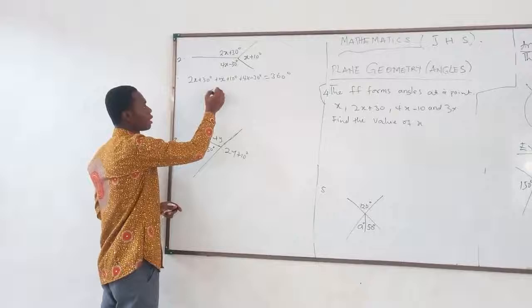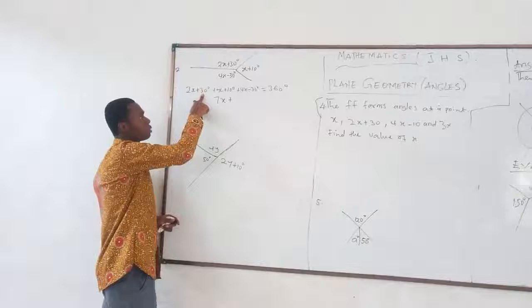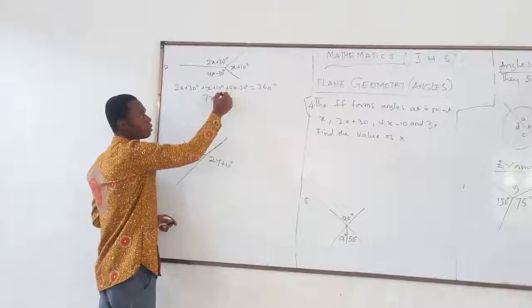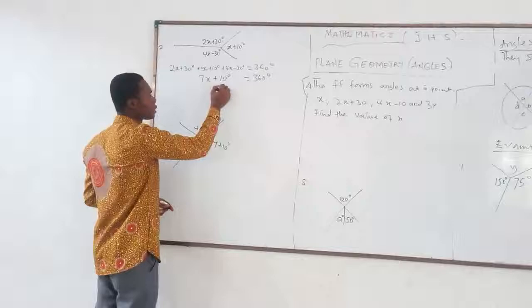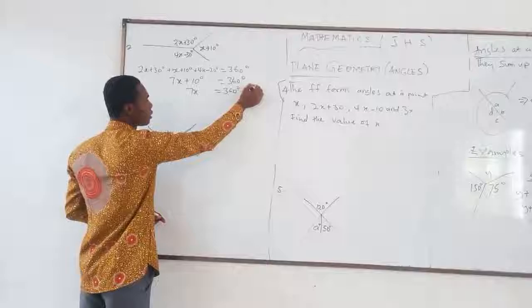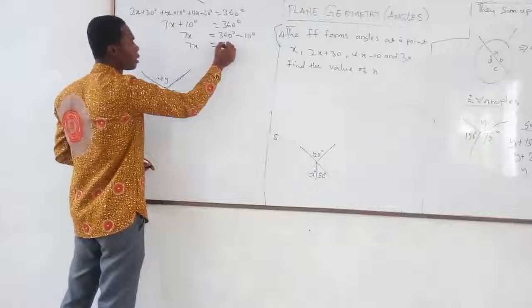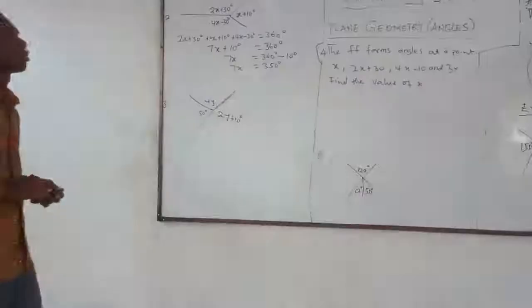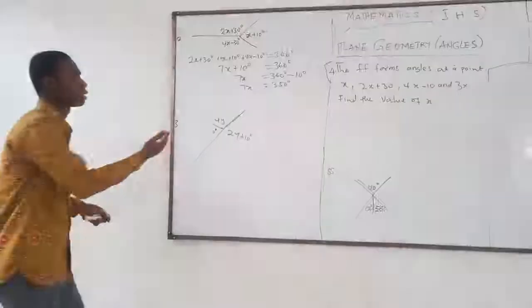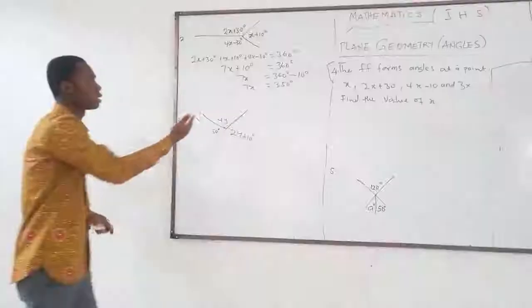Collecting like terms: 7X plus 30 plus 10 minus 30, which is 7X plus 10 degrees, equals 360 degrees. So 7X equals 360 degrees minus 10 degrees, giving 7X equals 350 degrees. The coefficient of X is 7, so 7 times a particular number is 350. What is that number?